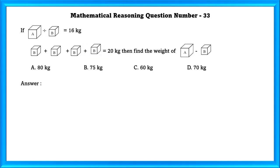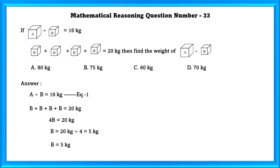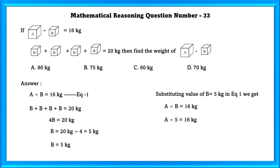Mathematical reasoning question number 33: If A block divided by B block equals 16, and B + B + B + B equals 20 kg, find the weight of A block minus B block. From 4B equals 20 kg, B equals 5 kg. Substituting into equation 1, A divided by 5 equals 16, so A equals 80 kg. Therefore A minus B equals 75 kg.